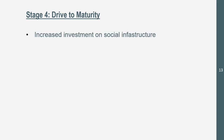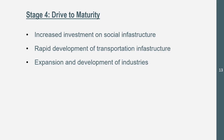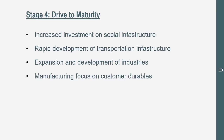Stage four is Drive to Maturity. We see increased investment in social infrastructure like education and hospitals. There is rapid development of transportation infrastructure — public services, buses, subways. New industries expand and develop beyond just factories and farms — like service industries such as barbershops. Manufacturing focuses on consumer durables, things people want but don't strictly need, like automobiles. An example of a drive-to-maturity country is Brazil.